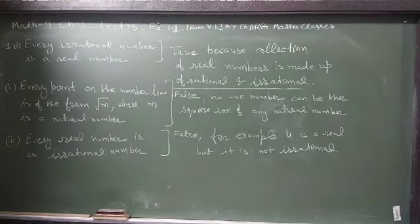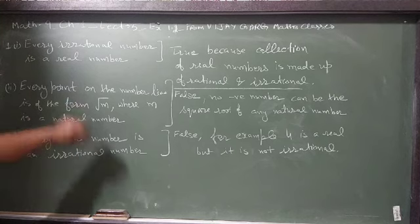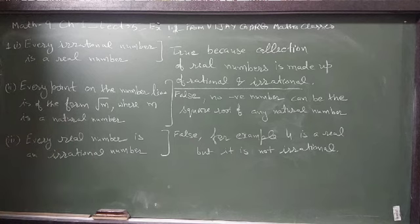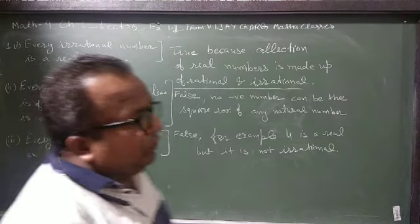Now come to second part: every point on the number line is of the form square root of M, where M is a natural number.